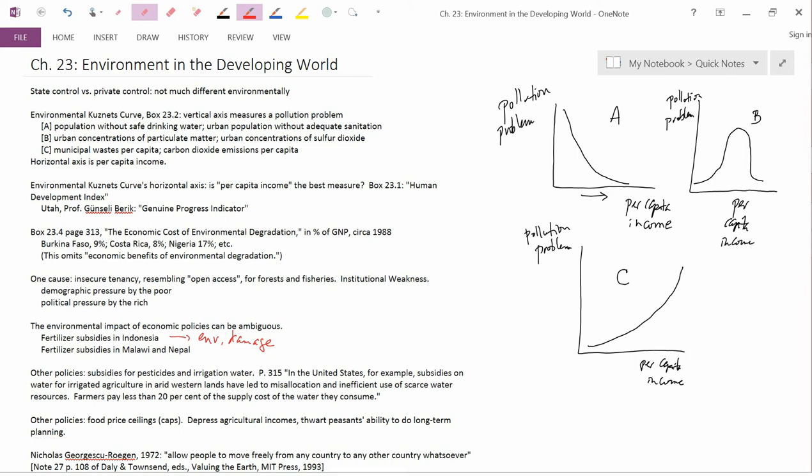And the fertilizer subsidies in Malawi and Nepal enable these farmers to change their time horizon. Their time horizon used to be really short, just one growing season, because they were on the verge of starvation. And so, they couldn't engage in long-term planning.